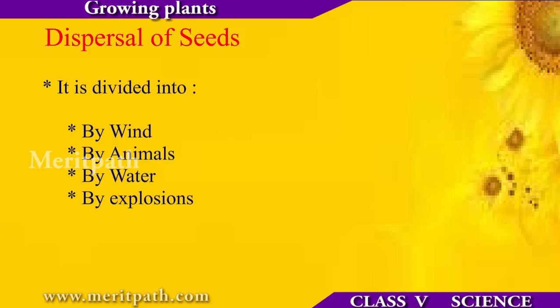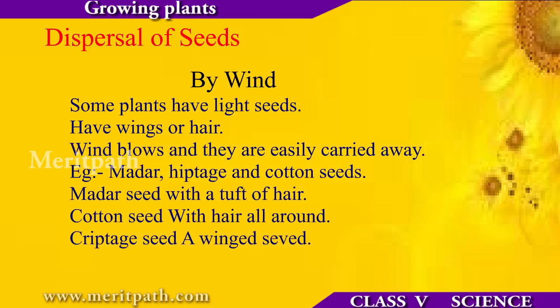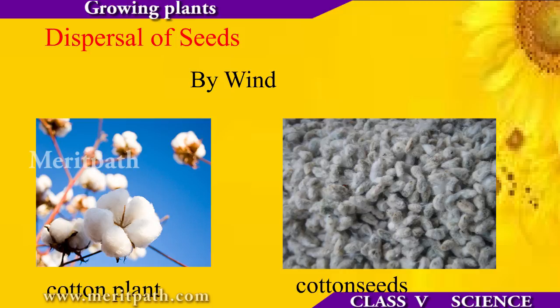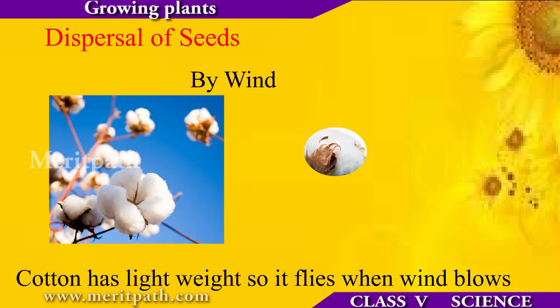Animals also eat seeds, and sometimes wind and rain destroy seeds. Fruits and seeds are scattered with the help of wind, water, animals and the explosion of fruits. Seeds like maple and drumsticks have wings attached to them which help them float in air. Seeds like Antillean and cotton have long and fine hair surrounding them.